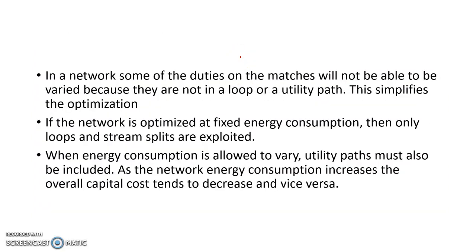Some exchanger duties cannot be varied because they are not in any loop or utility path, simplifying the optimization. If the network is optimized at a fixed energy consumption, only loops and stream splits are exploited — utility paths are not touched since using them would increase utility usage. When energy consumption is allowed to vary, utility paths must also be included, because as network energy consumption increases, the overall capital cost tends to decrease.